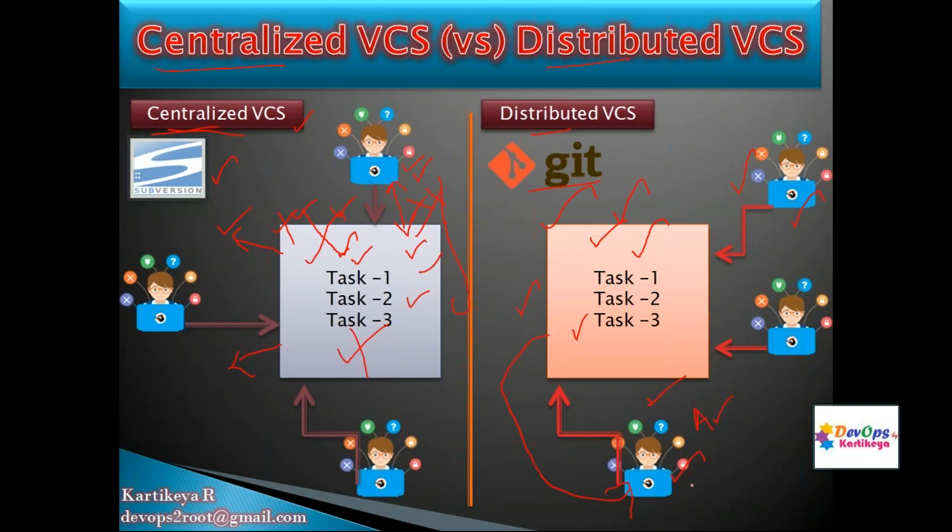In this process, if the main central repository fails, your data is still available in local repositories. Each developer has a complete copy locally. Even if internet connectivity is lost, you can work on your tasks because you have the complete repository information locally. You can work and commit changes, then push them later when connectivity is restored.